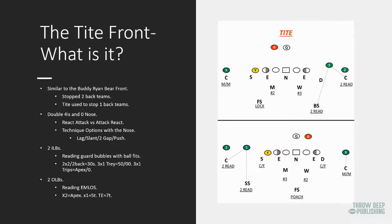Their rules in fall camp versus two split wide receivers — they're going to be apex. Apex is right here. They're just going to be anywhere between four to five yards of depth, splitting the difference between the end man on the line of scrimmage and number two.